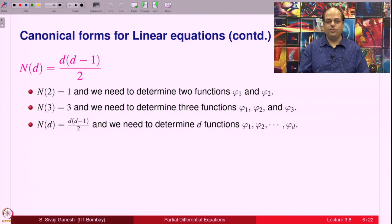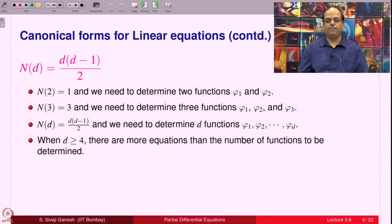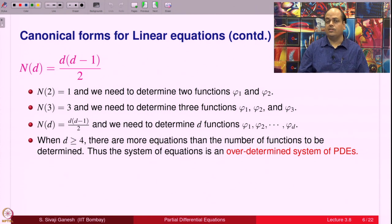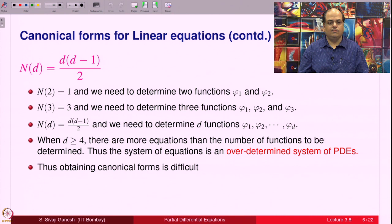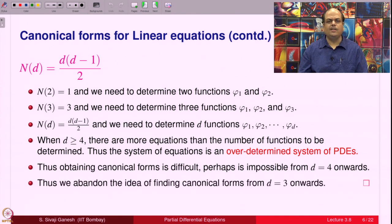But d(d−1)/2 equations to determine d functions — this number is much more than d if d is bigger. When d ≥ 4, the number of equations exceeds the number of functions φ₁, φ₂, …, φ_d to be determined. More equations than unknowns means the system is what is called an over-determined system of PDEs. More restrictions than things to find. In such cases, the natural thing to believe is that perhaps there are no solutions — unless some magic happens. Even if a solution exists, finding it is not easy. So obtaining canonical forms is difficult, perhaps impossible, from d = 4 onwards. Therefore, we abandon this idea of finding canonical forms if the number of independent variables is 3 or more.